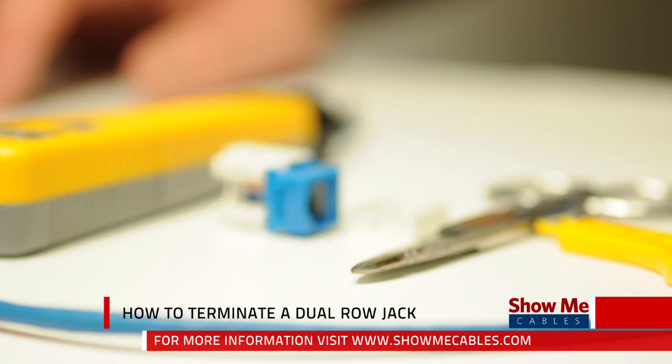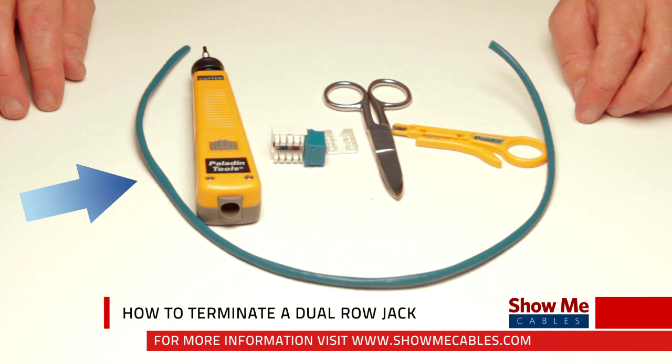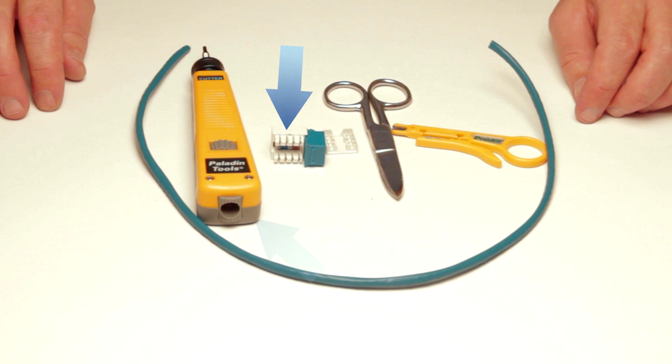The materials we need for the installation are Cat5e cable, a Cat5e Keystone Jack, a punch down tool, technician scissors, and a cable stripper.